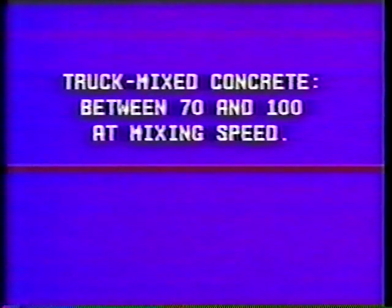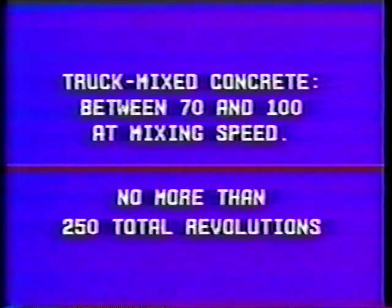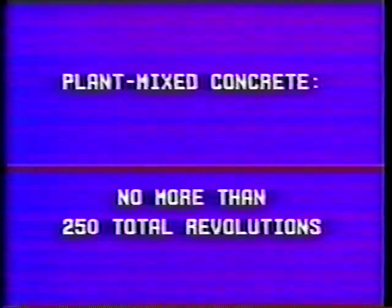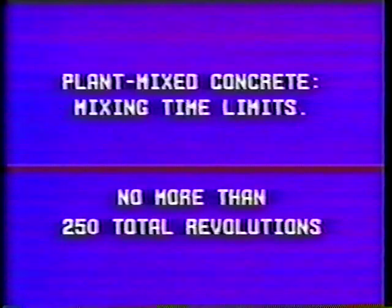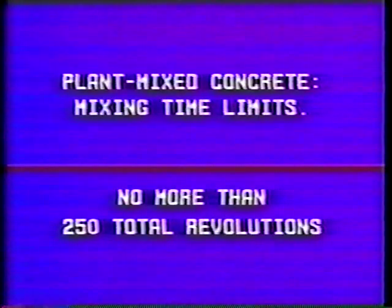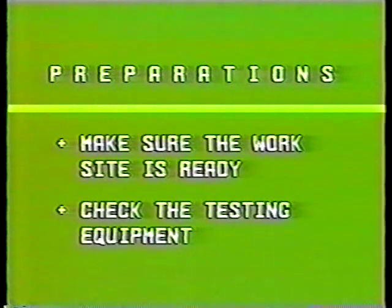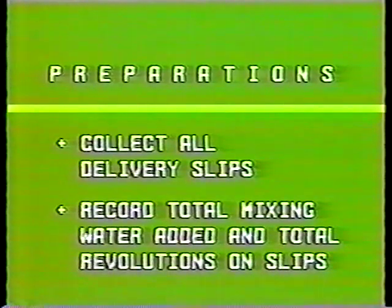If it's truck-mixed concrete, it has to be mixed between 70 and 100 revolutions at mixing speed, and no more than 250 total revolutions, counting both mixing and agitating revolutions. If it's plant-mixed concrete, there are mixing time limits for the central mixer, but the same 250 total revolutions limit applies for the hauling units, whether they're truck mixers or agitators. That covers preparations. Make sure the work site is ready, check the testing equipment — it should be in good shape and recently calibrated. Collect all delivery slips and record the total mixing water added and the total revolutions on the slips.